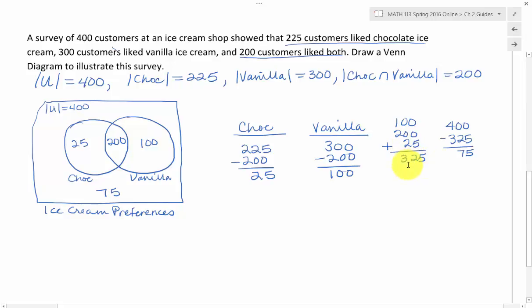When I took the cardinal number for the universe, 400, and subtracted off that 325, which is the total of all the sets we're showing here - chocolate or vanilla - I got 75. This means there are 75 people who didn't like either chocolate or vanilla.